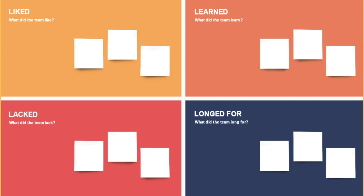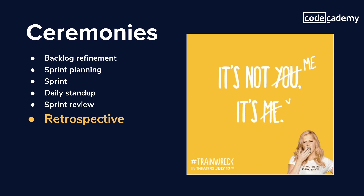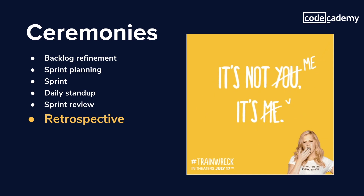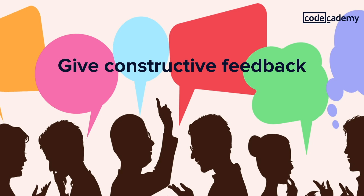During this time, the team reflects over the last sprint and identifies highs and lows — things that went well and things that could be improved. Honesty is incredibly valuable here because we all have room for improvement, and it's important to recognize what the team can do better in order to be more effective during the next sprint. The point of the retro is to explore what happened during the sprint, the impact it had on the team, and what can be done better next time.